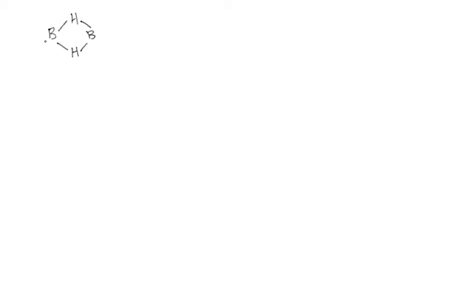Today we're going to be deriving the molecular orbitals for the diborane molecule. Last time we did plain old borane, BH₃, and we found that one of the atomic orbitals on boron was not even used for any bonding. It had an empty p orbital and could not achieve an octet. So we discussed that that is the basis for the dimerization reaction that leads to the diborane molecule. We're interested to observe the form of the molecular orbitals to see if, in the diborane molecule, all of the valence electrons and all of the valence atomic orbitals of boron are actually able to become involved in bonding interactions.